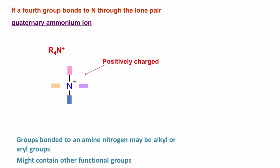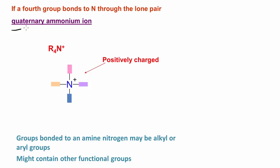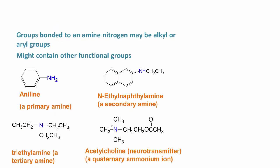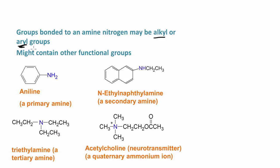If a fourth group bonds to nitrogen through the lone pair, what we would have is a quaternary ammonium ion. We would have a nitrogen bonded to four organic groups and it would have a positive charge. Think of the ammonium ion — ammonia has this lone pair, and if a proton bonds through this lone pair, then we have the ammonium ion, which is positively charged. So the quaternary ammonium ion has four organic groups bonded to it, bonding through that lone pair, and we end up with this positive charge.